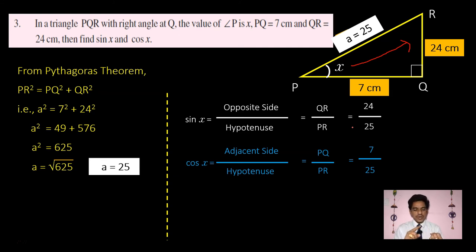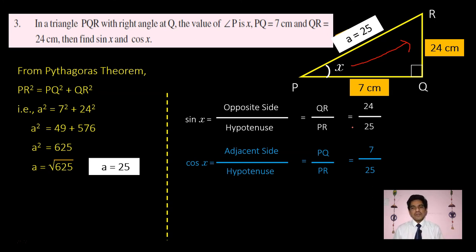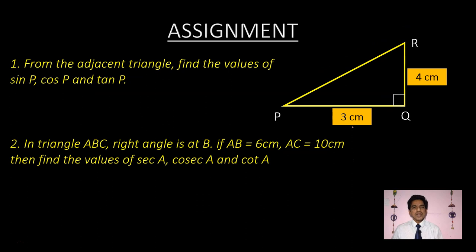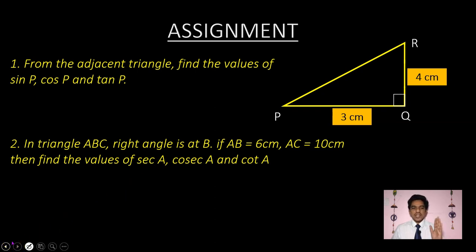That is how this tutorial on trigonometry ends. We learned the six trigonometric ratios and how to use Pythagoras' theorem to find the missing side, then calculate the ratios. This is your assignment for today — I have given two triangles; you have to find the given ratios. For the first triangle the diagram is given; for the second you have to draw your own diagram and solve both problems. Practice them well before moving to the next tutorial. Thank you.